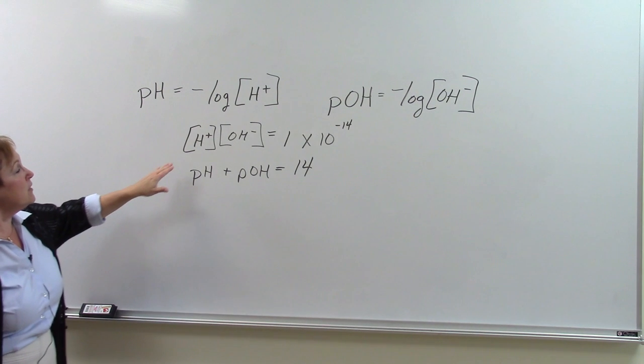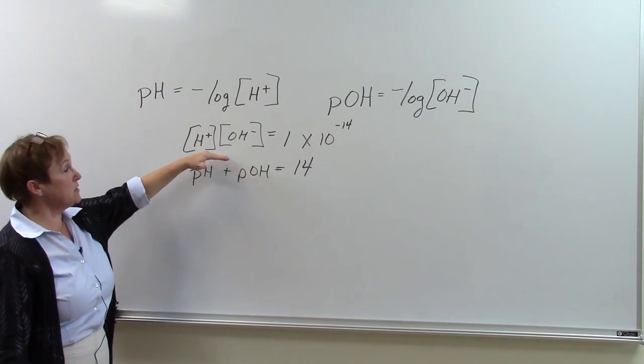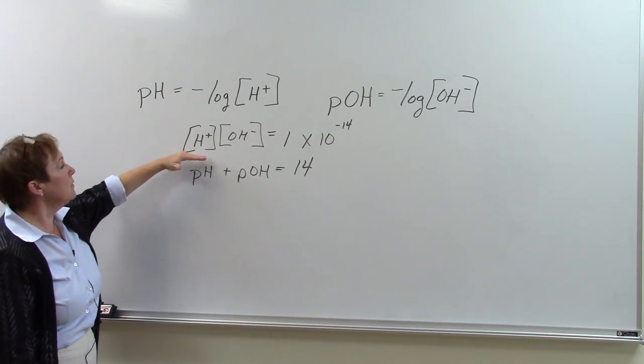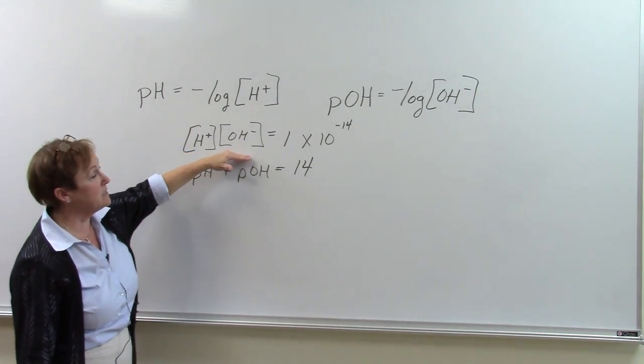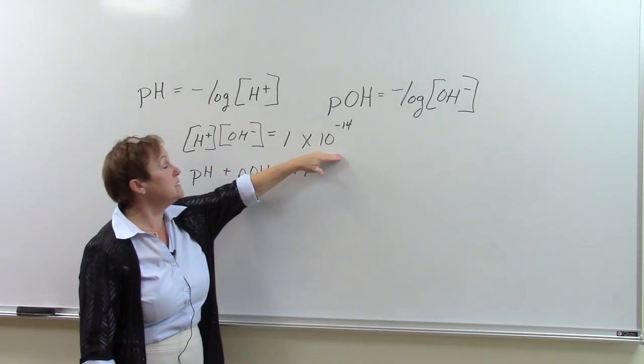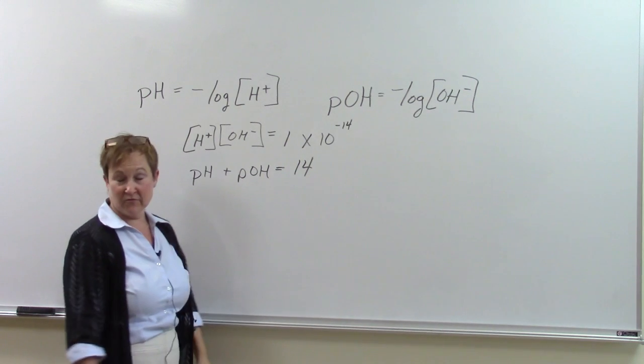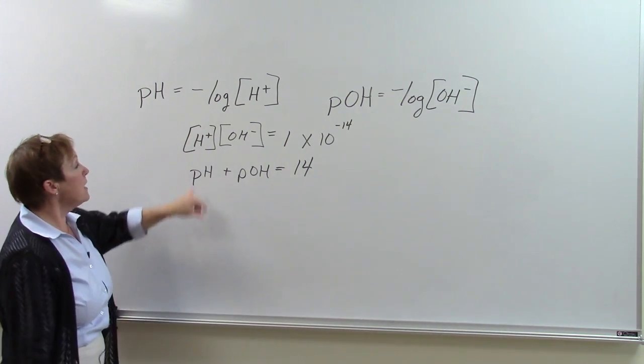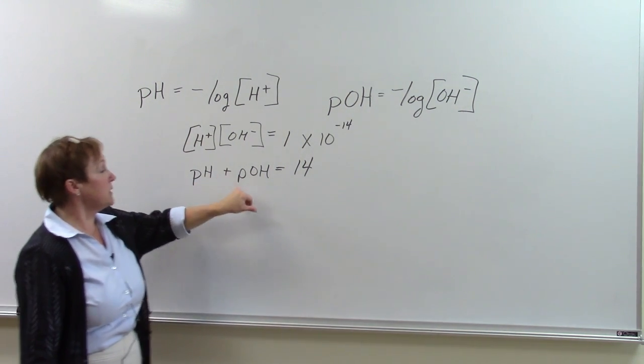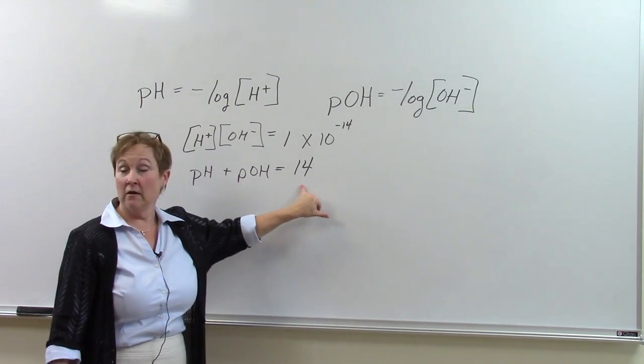We have to remember that due to the dissociation of water, for example, the hydrogen ion concentration multiplied by the hydroxide ion concentration is always equal to 1 times 10 to the minus 14th molar, which means the pH plus the pOH is going to be 14.